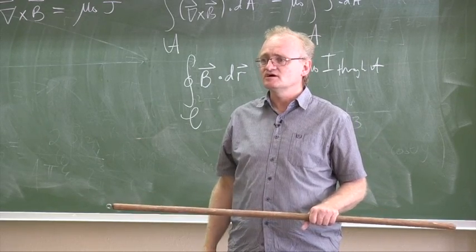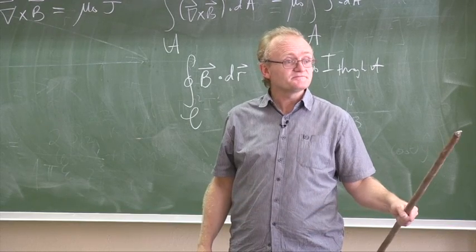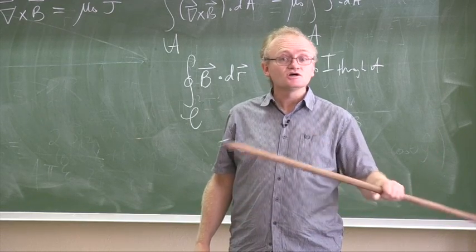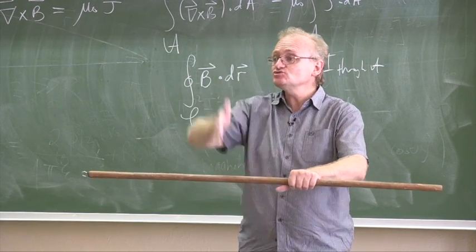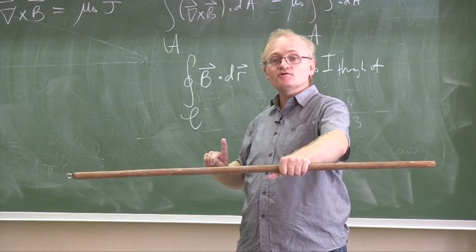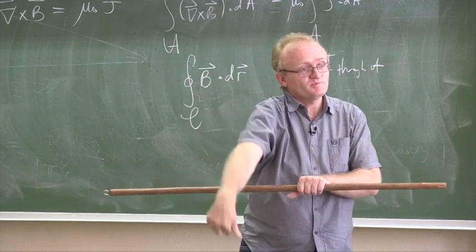When we calculated the electric field from an infinitely long charged rod, how did it fall off? 1 over 2 pi r. Why? The field spread out in two dimensions, right? So we ended up getting a fall off of the field of 1 over 2 pi r.